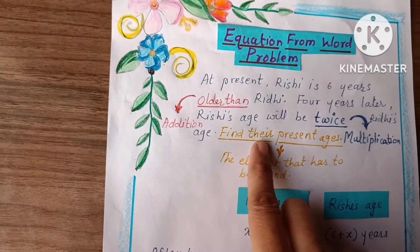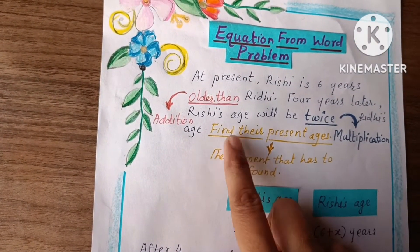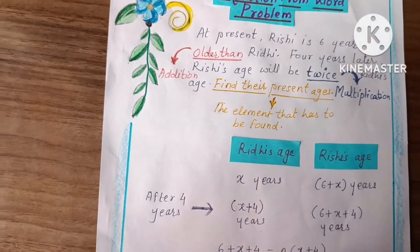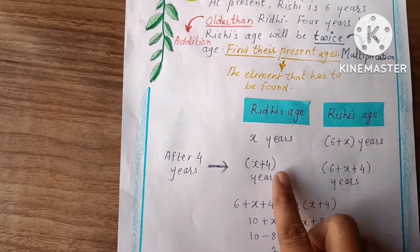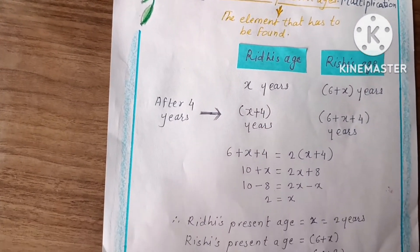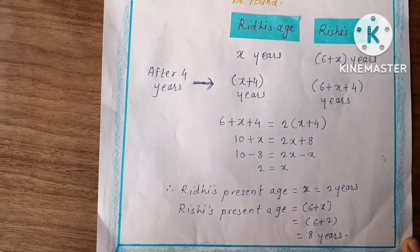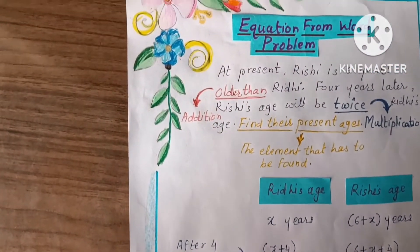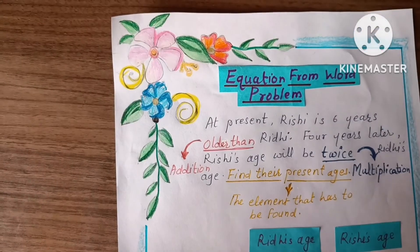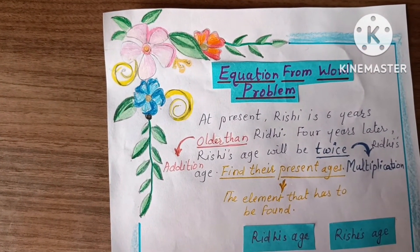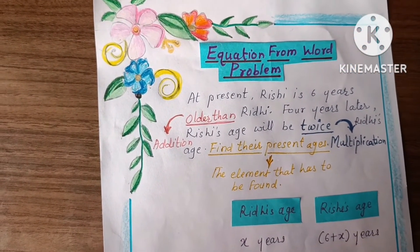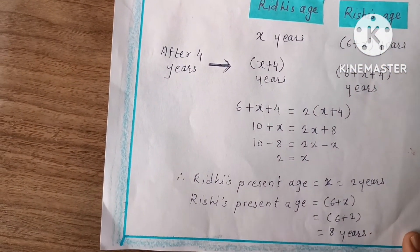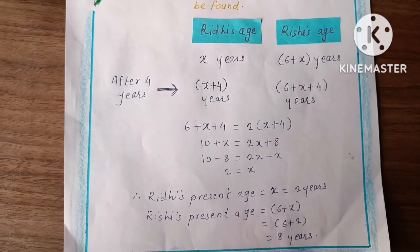Here we have to find the element that needs to be found. Here is the answer. There is one example of a word problem and here is the solution of the same. Let's see the next page.